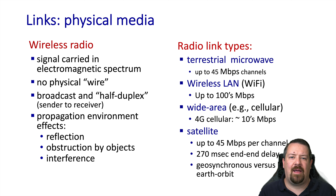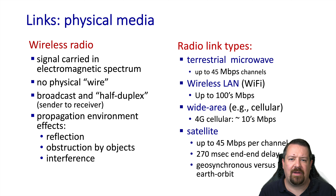Undirected channels, i.e., radio, have a number of properties that differentiate them from wired networks. Wired links are typically bidirectional, whereas the wireless channel is half-duplex, meaning that if a node is transmitting, it cannot also receive at the same time. Wireless networks are challenged by interference from other devices or natural sources such as the sun, and radio signals are reflected and obstructed by ground features or buildings. Examples of wireless links include terrestrial microwave, Wi-Fi or wireless LAN, cellular networks, and satellite networks. One significant performance differentiation for satellite is its increased latency, on the order of hundreds of milliseconds, where terrestrial links tend to be in the single digits or tens of milliseconds.